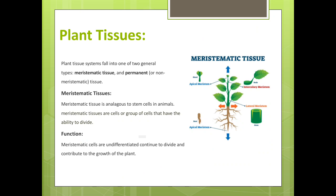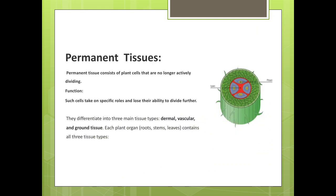Plant tissue systems fall into one of two general types: meristematic tissues and permanent tissues. Meristematic tissue is analogous to stem cells in animals — they are cells or groups of cells that have the ability to divide. Meristematic cells are undifferentiated, continue to divide, and contribute to the growth of the plant. Permanent tissue consists of plant cells that are no longer actively dividing; such cells take on specific roles and lose their ability to divide further.